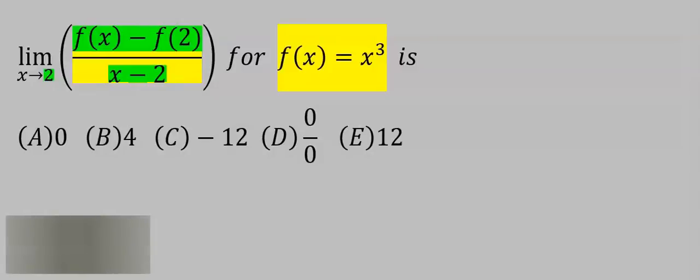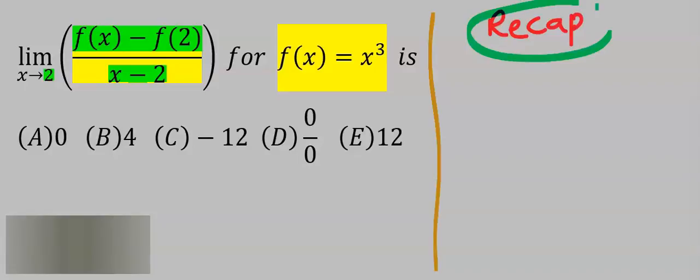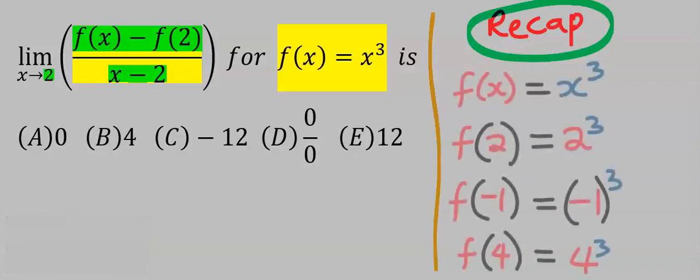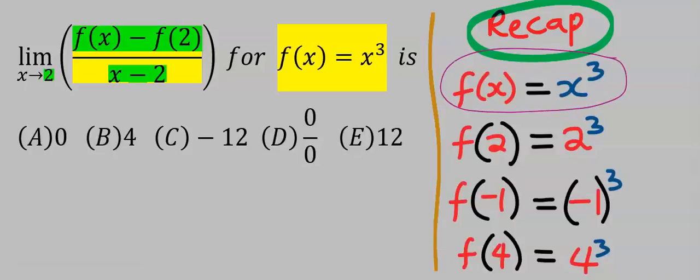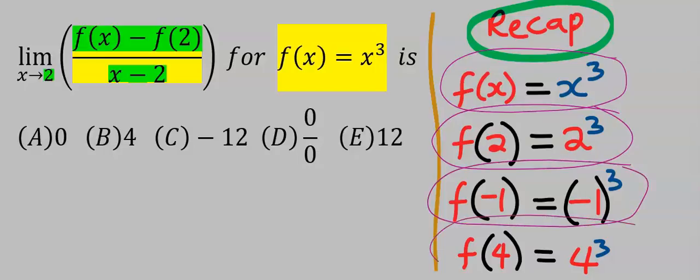Consider this question. Before we solve this question, let's recap. If f(x) is equal to x to the power of 3, then f(2) will be 2 to the power of 3, f(-1) will be (-1) to the power of 3, and f(4) will be 4 to the power of 3.